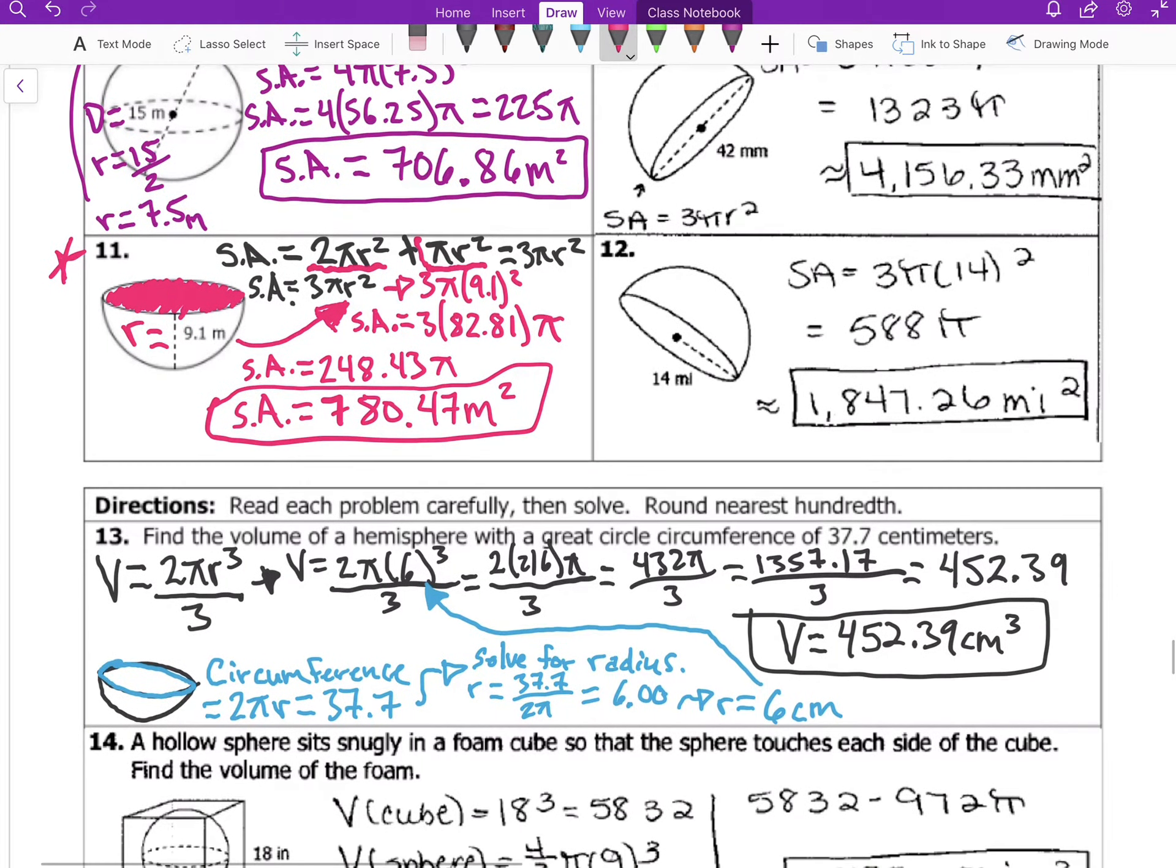Number 13, we have word problems now - I know how much we love them. So we find the volume of a hemisphere with a great circumference of 37.7 centimeters. Now here there's a circumference, right? The circumference is 2πr equals 37.7, so the circumference - we have to solve for r. So once we solve for r, this is how you set it up. We're working backwards here. So 2πr - we divide 2π to both sides. Hopefully you can see that.